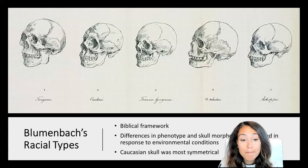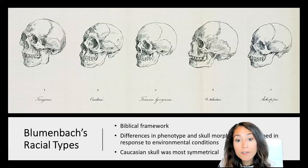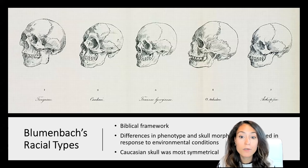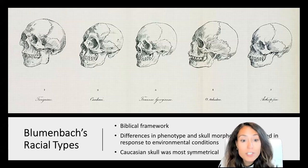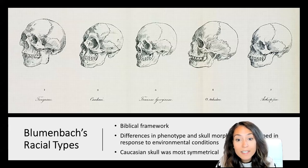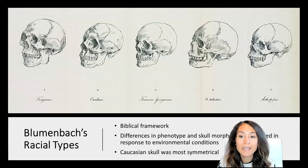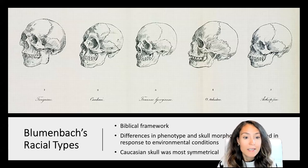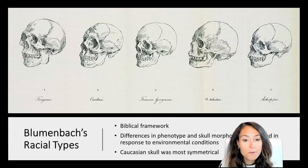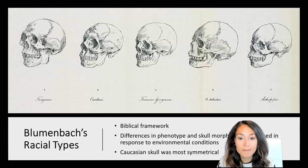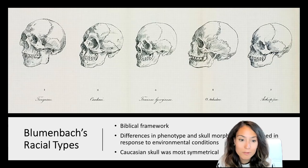Blumenbach applied a biblical view to human diversity and argued that people spread around the world after the Great Flood. He assumed that Caucasians were the primary or original race because they had strayed the least distance away from the ark's reported landing point in Turkey and the Middle East. He also noted that the Caucasian skull was most symmetrical and therefore nearest to perfection, indicating that it was the type of skull first created by God.